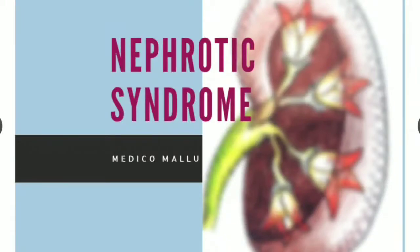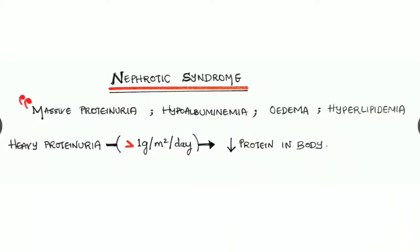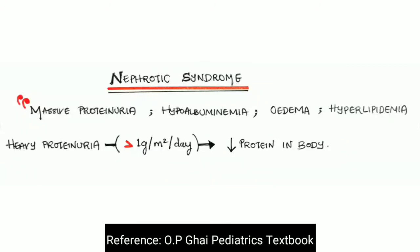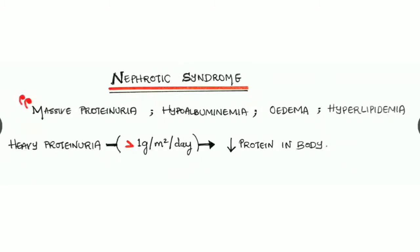Welcome young doctors. This time we are going to discuss nephrotic syndrome. Nephrotic syndrome is a kidney disease featured by massive proteinuria, hypoalbuminemia, edema, and hyperlipidemia. It is due to injury to the podocytes in the glomeruli. The main feature is heavy proteinuria, which is more than 1 gram per meter square per day.